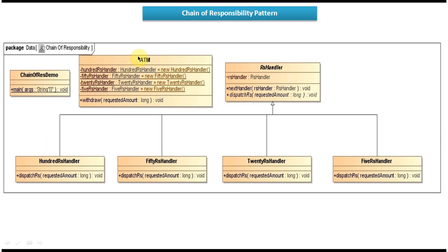On the left side you can see the ATM class, which has a withdraw method. Once the withdraw method is called it will call the first handler in the chain, which is the 100 Rupees handler. The ChainOfResponsibilityDemo is the client code that calls the ATM withdraw method. This is the class diagram of the sample code we are going to see — I will open Eclipse and show you.